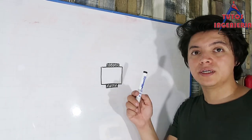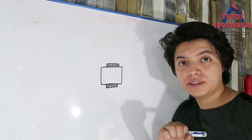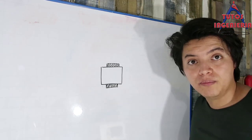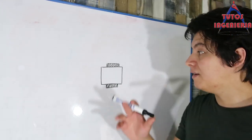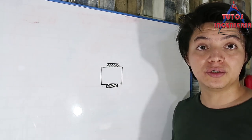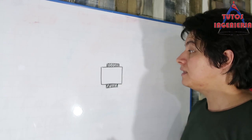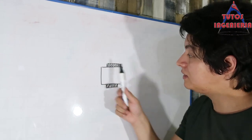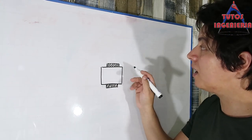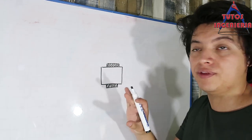In this part we are going to talk about the car. The model that we are going to use is the differential model, which is a very popular model in robotics literature. With this model, we are able to make the car achieve any point on the plane.